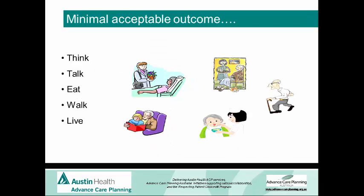We talk quite a bit about minimal acceptable outcome. The things that seem to be important to most people are: ability to think, ability to talk, ability to eat, ability to walk. There are ways to augment people's abilities to do those things — so it's not that you walk or you don't, you might be ambulant in a wheelchair. Often when we're talking about treatments, we're weighing this versus actually being alive, so it's not always clear cut. Some people will choose to be alive more than they'll choose to avoid the disability, while other people may have very strong views about the level of disability they can cope with. I think we should be focusing on outcome, so that when we're in intensive care or in a MET call or on the ward, we can think about what we do to help the person get the outcome they're hoping for.